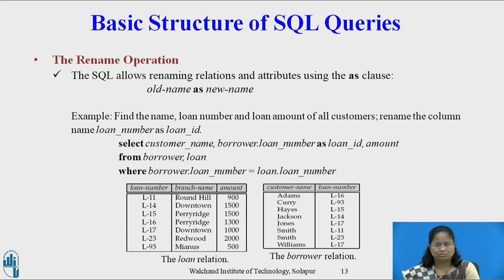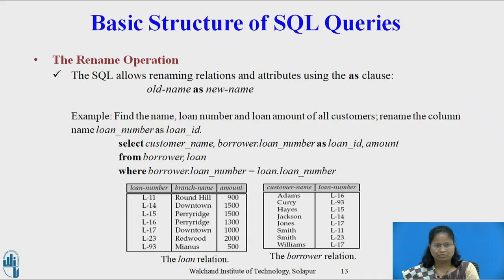SQL provides a mechanism for renaming both relations and attributes. It uses the AS clause, taking the form old_name AS new_name. The AS clause can appear in both the SELECT and FROM clauses. Example: find the name, loan number, and loan amount of all customers, and rename the column LOAN_NUMBER as LOAN_ID. SQL command: SELECT CUSTOMER_NAME, BORROWER.LOAN_NUMBER AS LOAN_ID, AMOUNT FROM BORROWER, LOAN WHERE BORROWER.LOAN_NUMBER = LOAN.LOAN_NUMBER.